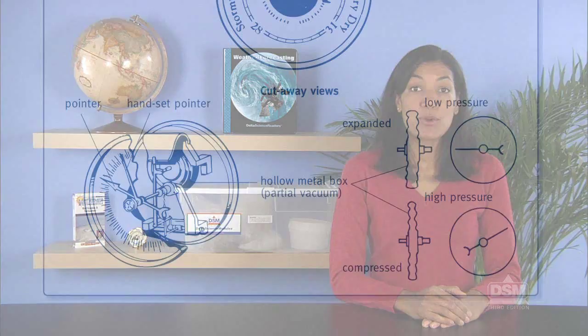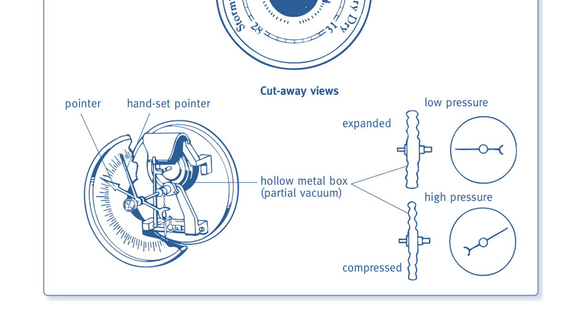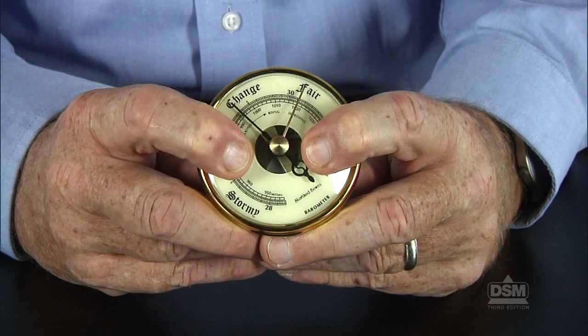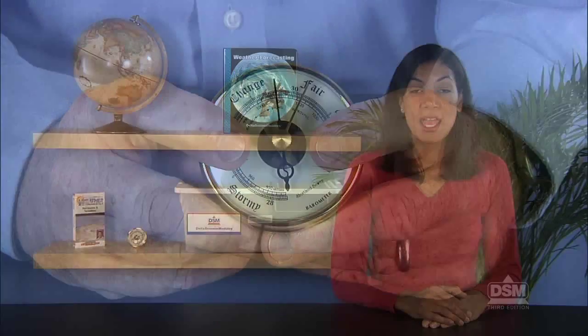As the air pressure surrounding the box goes up and down, the metal box compresses and expands, respectively. Tell them that one side of the box is connected to the pointer, so as the shape of the box changes, the pointer moves. By determining where the pointer is on the face of the barometer, one can assign a barometric pressure reading for the air pressure at that location.